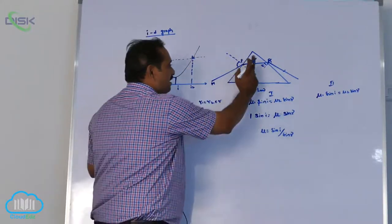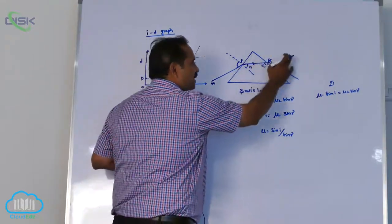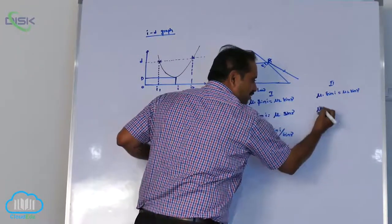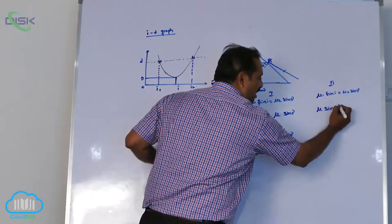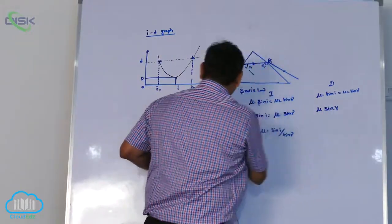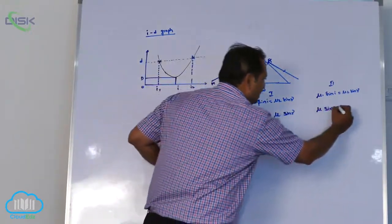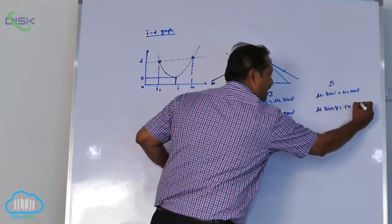Second surface: light where to where it moves? Light is moving from denser to rare, denser means mu. But your angle of incidence is not i, r, it is nothing but r, according to this minimum deviation, mu into sin r, then refractive index is i.